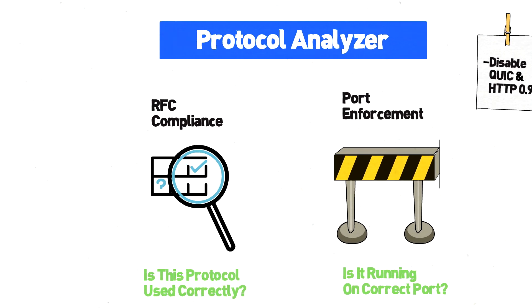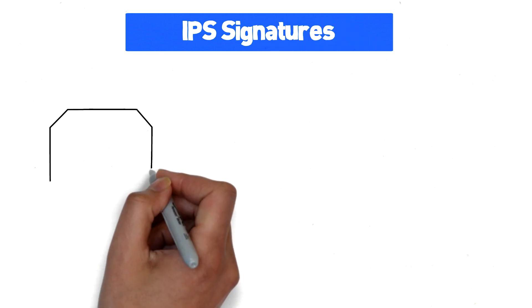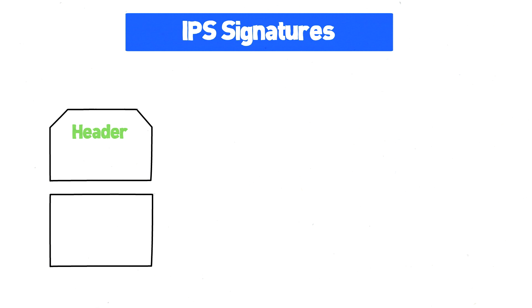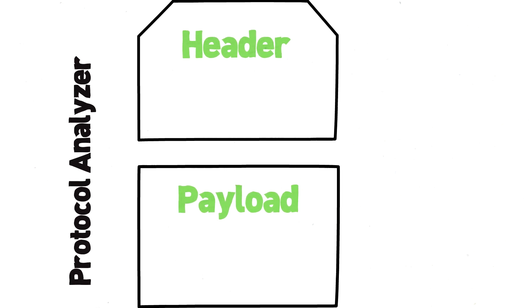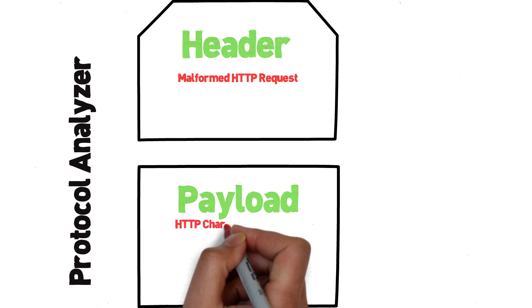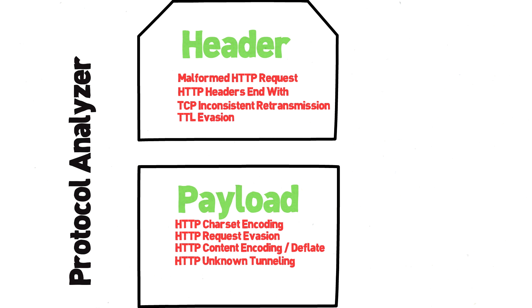The first two items on our list were geared toward making sure that protocols are compliant to RFC standards, but we need an additional layer of defense against more sophisticated evasion techniques. This is where our IPS engine will assist by looking beyond the protocol and into the payload and methods where data may be hidden. The specific signature names vary by vendor, but the attacks your signatures should protect against include: malformed HTTP requests, HTTP charset encoding, HTTP request evasion, HTTP content encoding deflate spoofing, HTTP headers ending, HTTP unknown tunneling, TCP inconsistent retransmissions, and TCP TTL evasion.